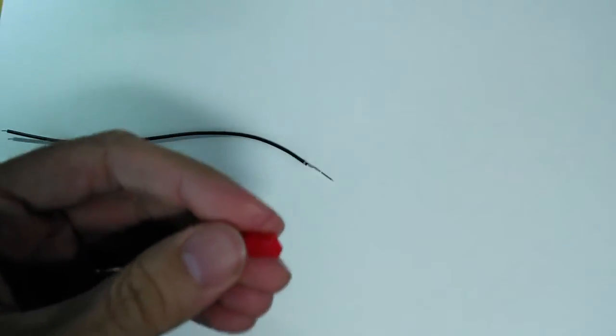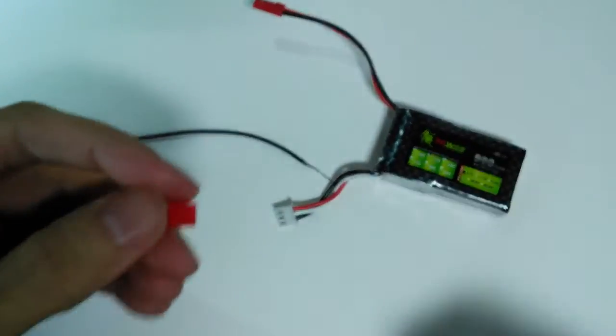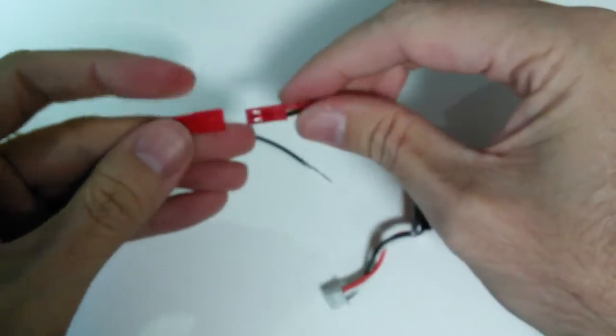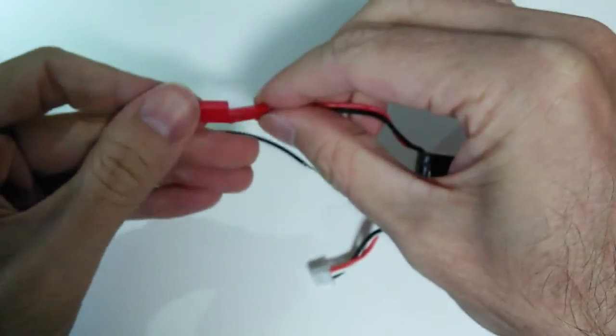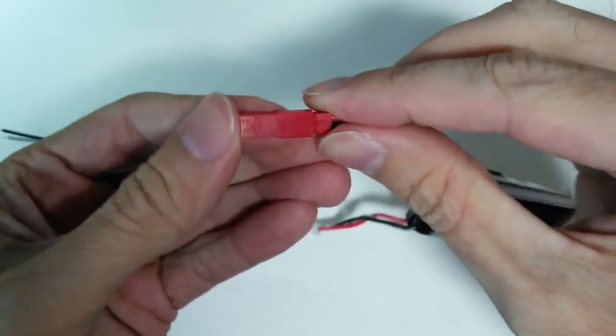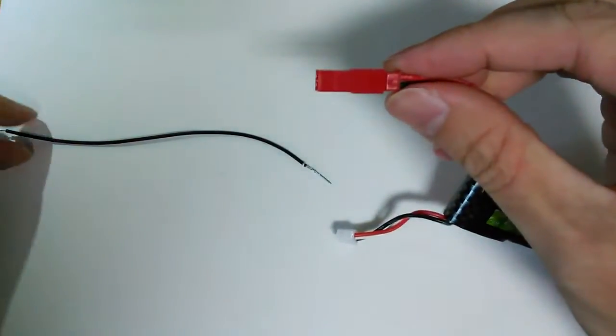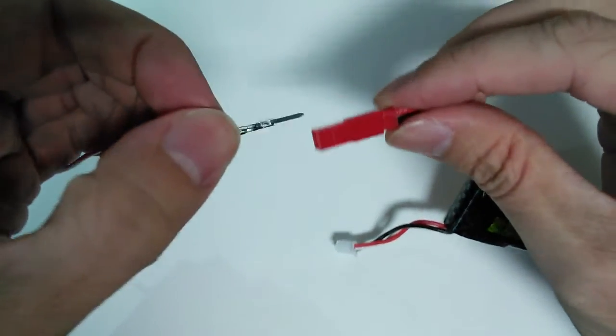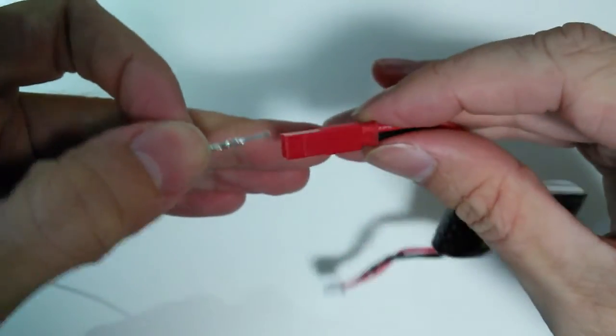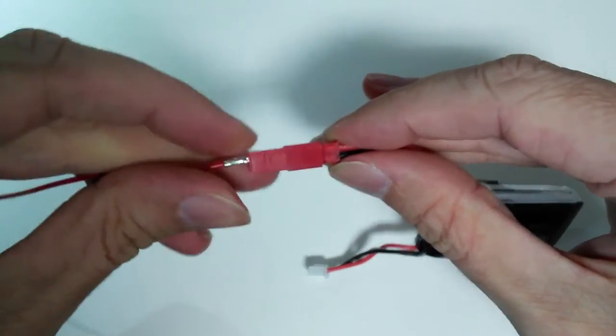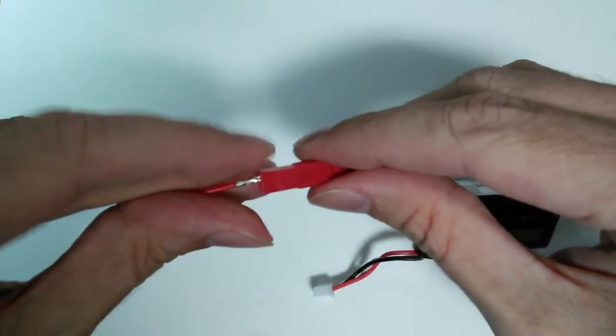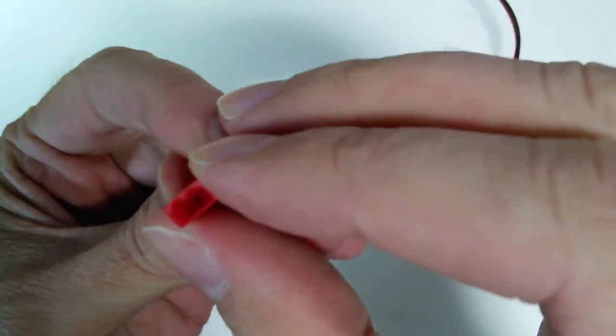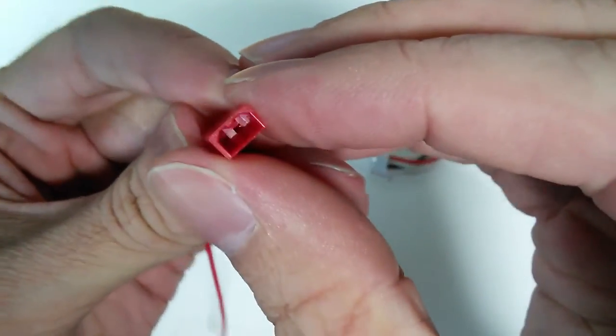Alright so now what I'll do is I get my battery. And just make absolutely sure we're getting red to red and black to black. So that goes like that. And then my red one that I lifted up the barb on again. He needs to go in there.